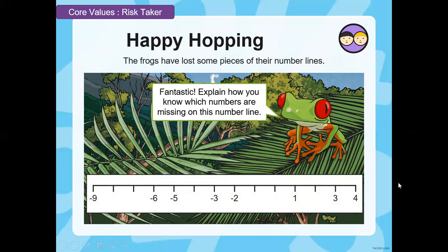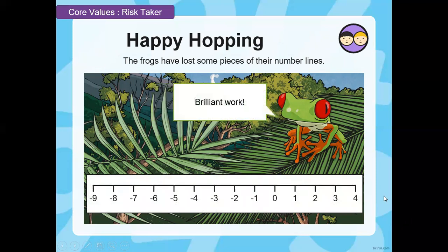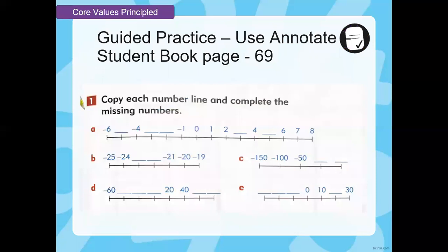Then we have another one — how do you know which numbers are missing on this number line? This one looks really confusing, but you can still do it. Locate where the zero should go, and then from the left of zero your negative numbers start — from there you can fill all the empty spaces. Pause the video and resume when you have your answers to check them. Well done, brilliant! Now this is for you to do from your student book, page 69.